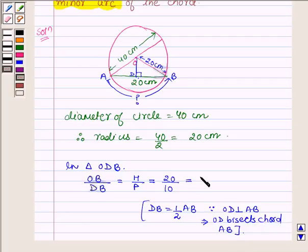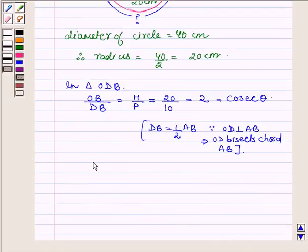Which is equal to 2, and H upon P is equal to cosec theta. This implies theta is equal to 30 degrees.